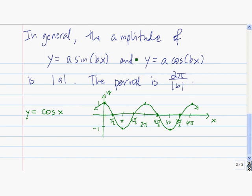If we want to do a transformation of it, we use the absolute value of this number to get the amplitude, and 2π over the absolute value of this number to get the period.